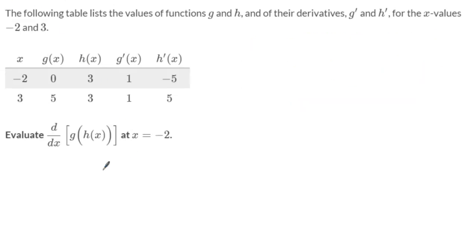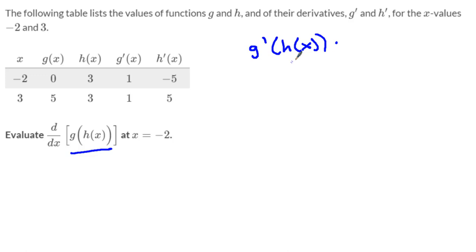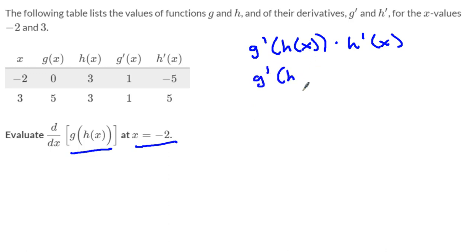So let's take a look at another one. Here I have g of h of x, and I want to know what the derivative is. So I have g prime of h of x — remember, leave the inside guy the same — multiplied by the derivative of the inside guy, h prime of x. Again, write this down every single time, it'll help out big time. And I want to know when x is equal to negative 2. So I'm going to plug in negative 2, and I have h prime of negative 2.